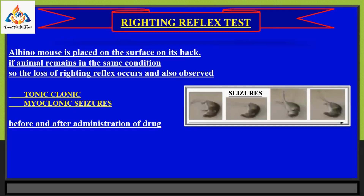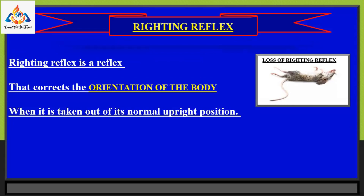In the writing reflex test, an albino mouse is placed on its back on a surface. If the animal remains in the same condition, loss of the writing reflex is noted. Tonic, clonic, and myoclonic seizures are also observed before and after administration of the test drug. The writing reflex is the motor ability for a mouse to flip onto its feet from a supine position. It is a reflex that corrects the orientation of the body when it is taken out of its normal upright position.